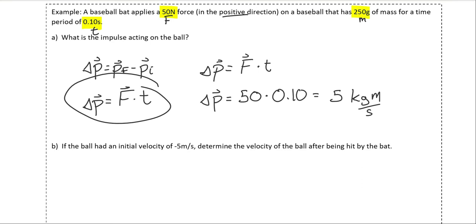This is a situation where we'd want to use the other form of our impulse formula. If we take a look, our impulse is equal to the final momentum minus the initial momentum.